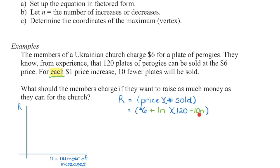So if N goes up by 1, we sell 10 fewer plates. If N equals 2, we sell 20 fewer plates. If N equals 3, we sell 30 fewer plates. Every $1 increase corresponds to 10 fewer plates sold. This creates a quadratic function in factored form — when foiled out, we get an N squared term, making it a degree two function. Because we're looking to maximize revenue, we can graph this and find our maximum.